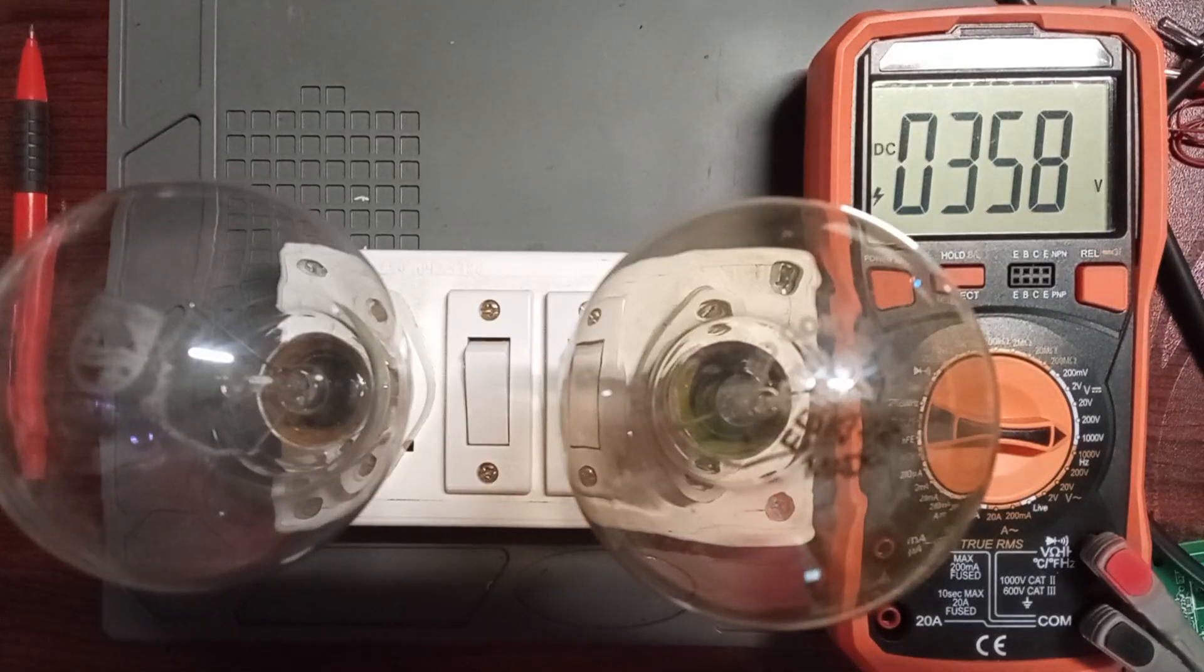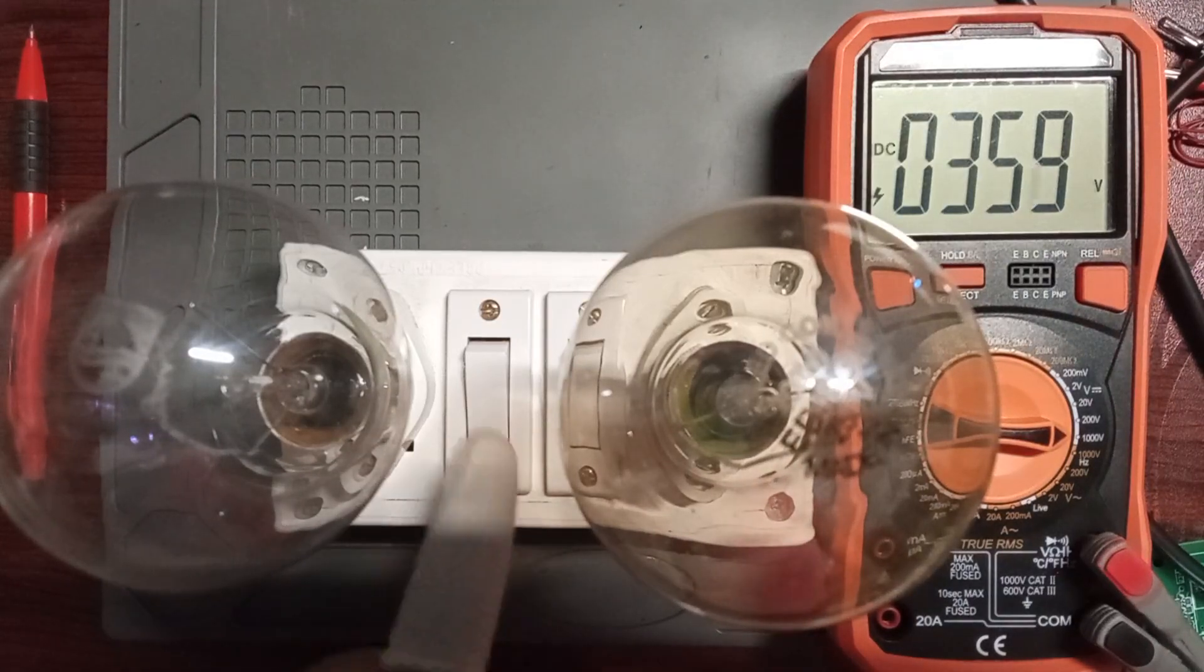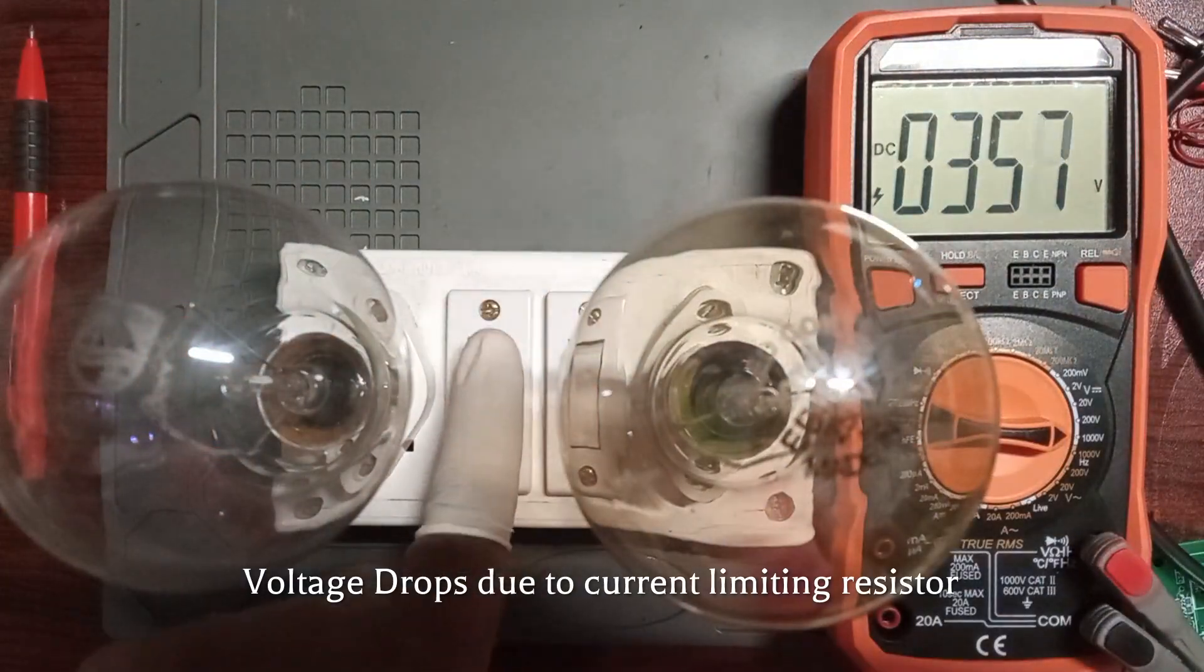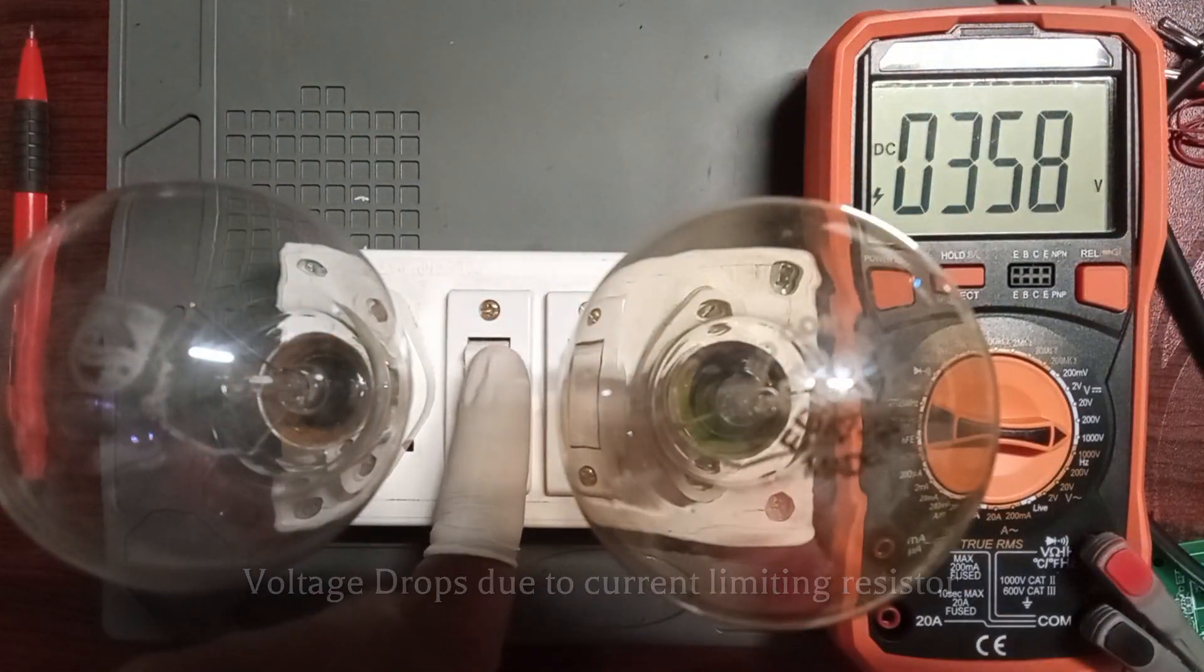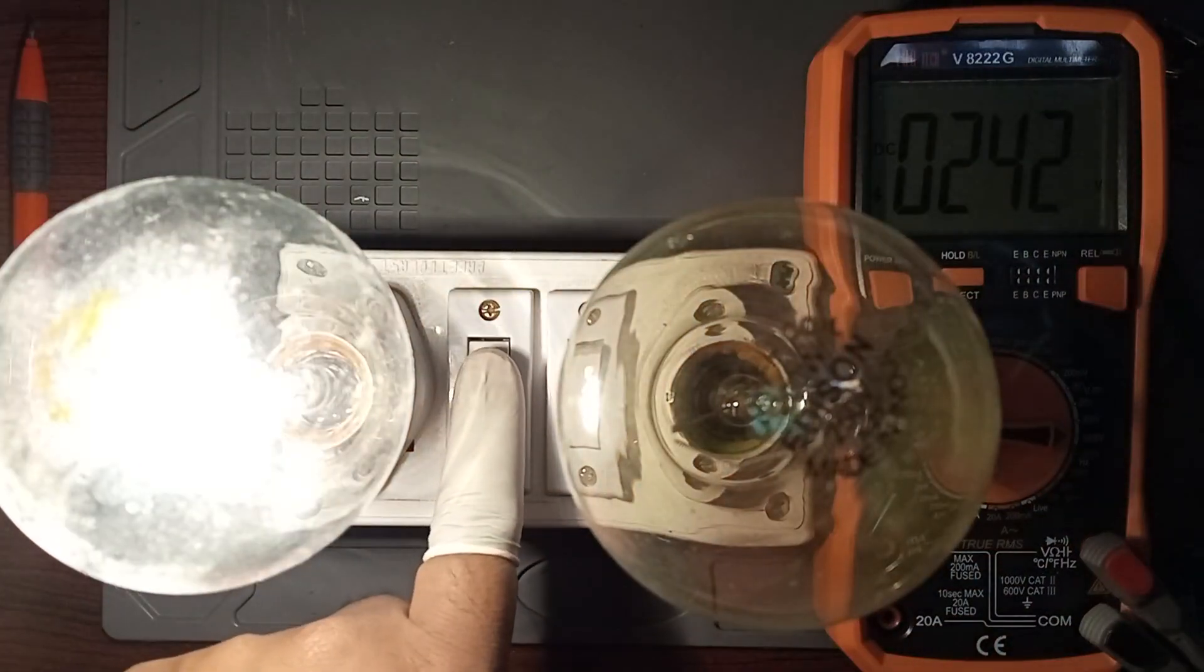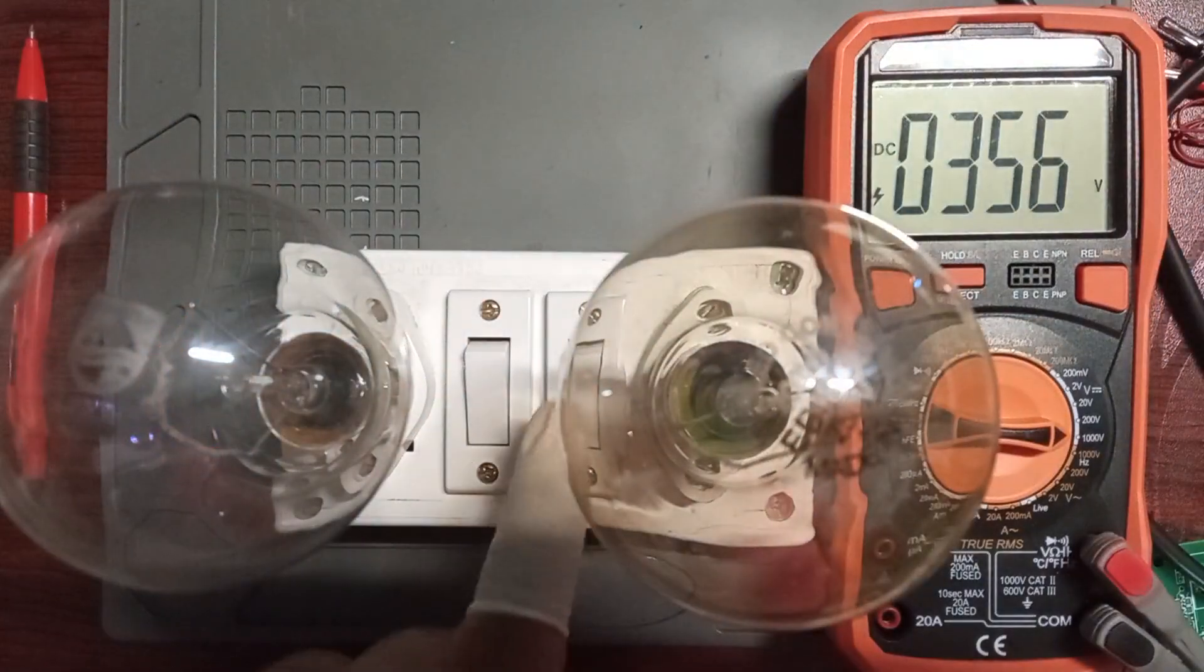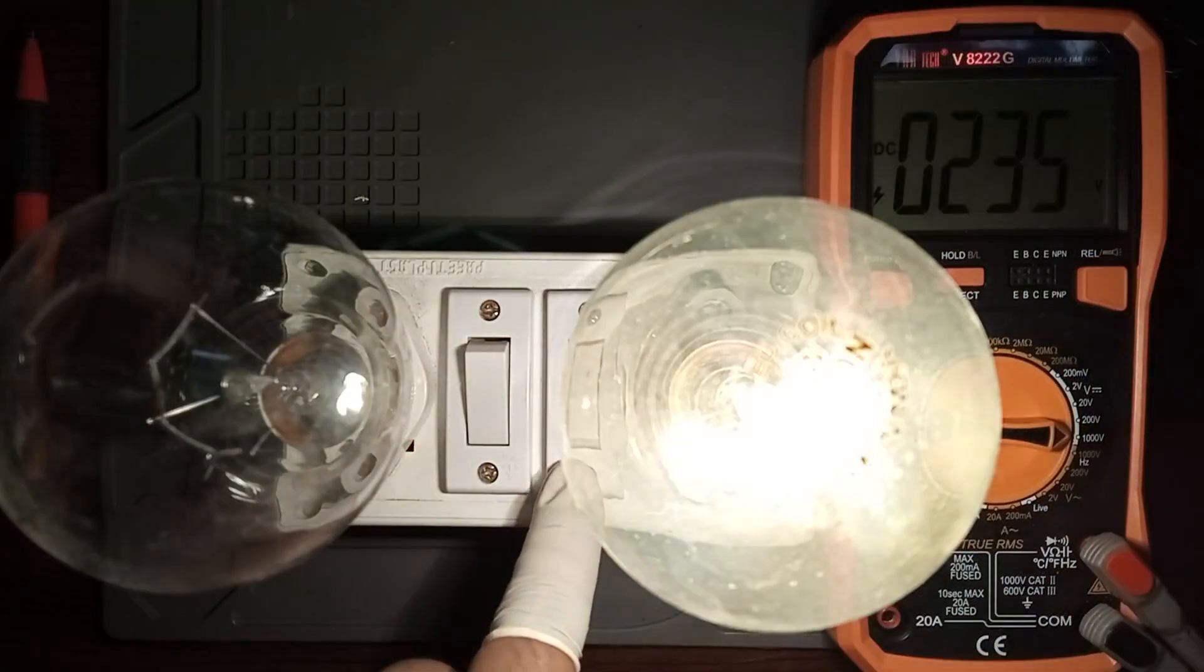Do you know what happens when you use an AC switch like this in DC? If you turn it on and off really fast, it works great. But when you turn the switch off slowly and roll the switch a little bit, it starts arcing and the arc persists for a long time.